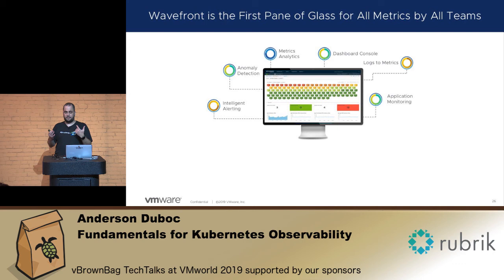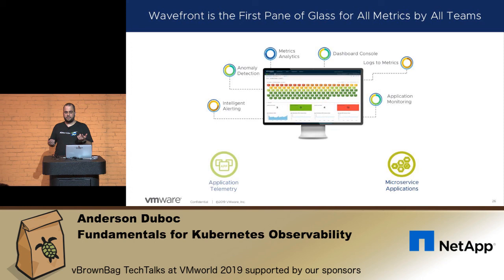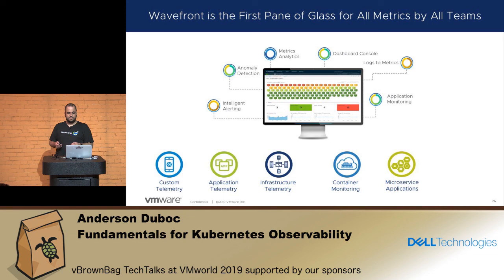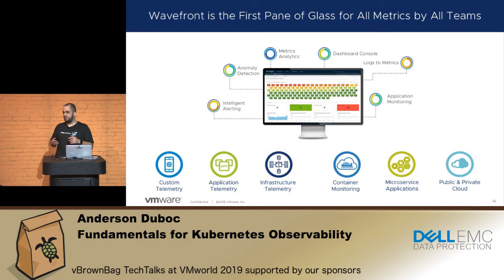When we look at something like this, we can use Wavefront as the single pane of glass for all metrics across all teams: analytics, anomaly detection, dashboards, logs and metrics. We can go microservice, application telemetry, container monitoring, infrastructure telemetry, custom telemetry, and public and private cloud. We can use Wavefront for something like that.